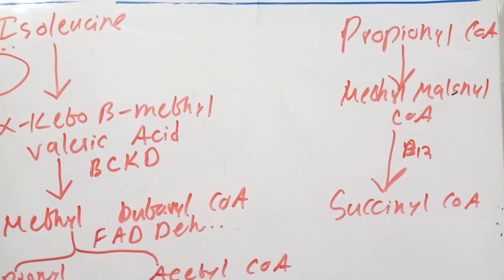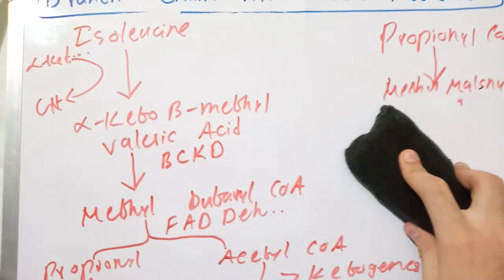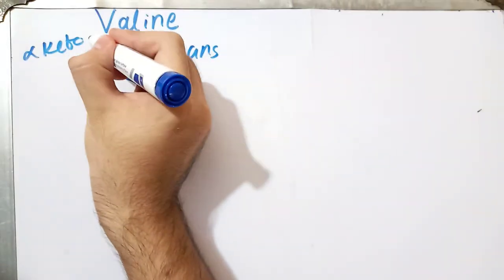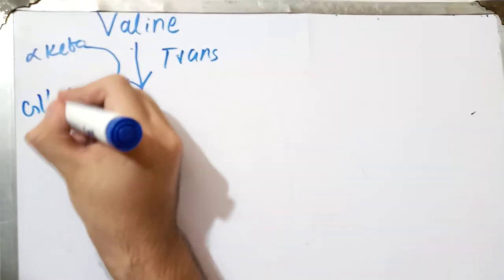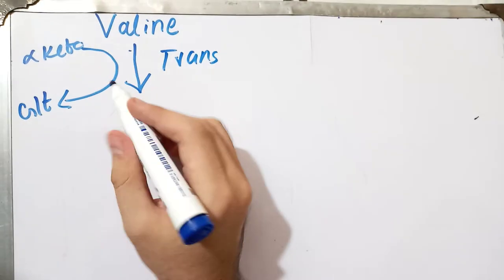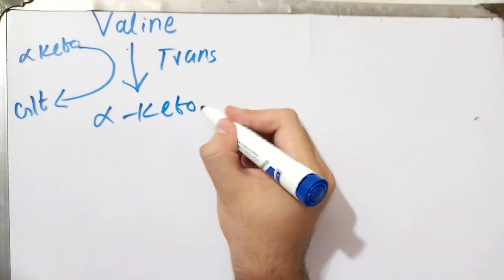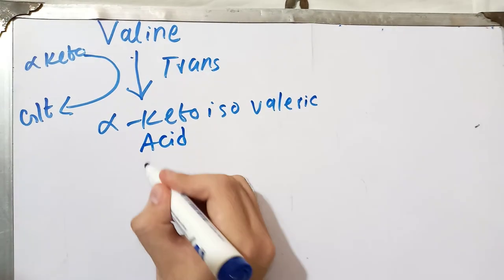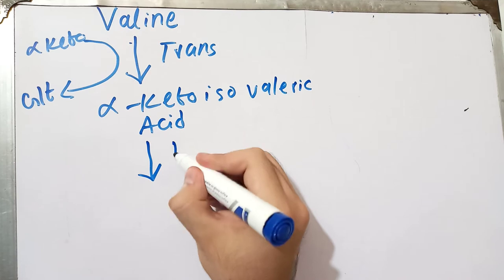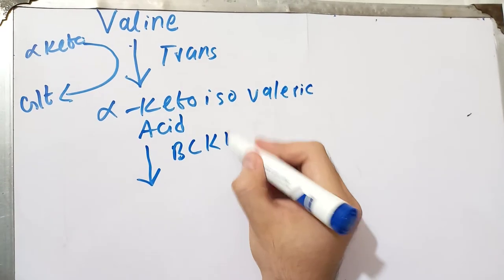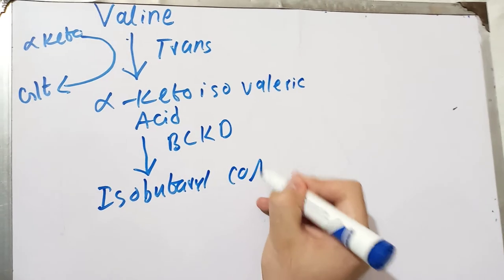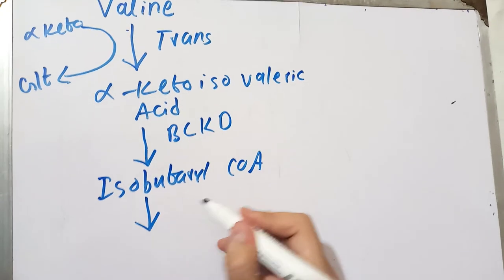Now let's talk about the amino acid that is left: valine. Valine will also first undergo transamination; alpha-ketoglutarate will accept the amino group and glutamate will be formed. The transamination of valine leads to the formation of alpha-keto isovaleric acid. The next step, just like all others, is the branched-chain alpha-keto acid dehydrogenation, which leads to the formation of isobutyryl-CoA.